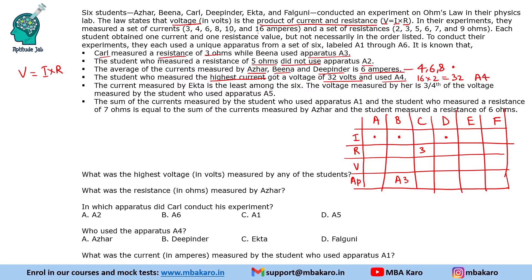The current measured by Ekta is the least, which is 3 amperes. The voltage measured by her is three-fourths of the voltage measured by the student who used apparatus A5. First, let us fill in the 32-volt student: 16 × 2 = 32, and we know Azhar, Bina and Deepinder use 4, 6 and 8. Only F can use 16 × 2 = 32 since Carl's resistance is 3.